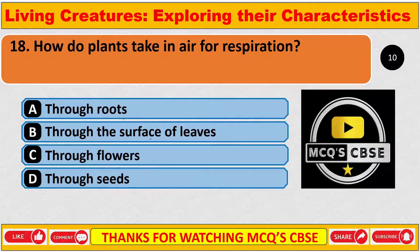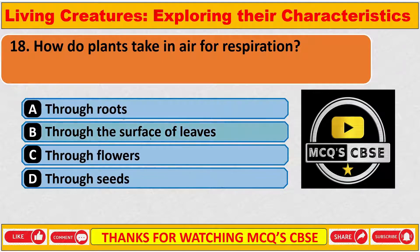How do plants take in air for respiration? The correct answer is B — through the surface of the leaf.